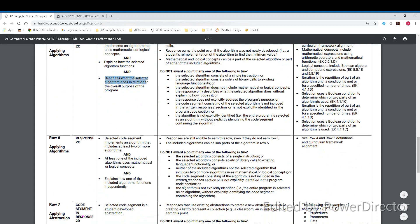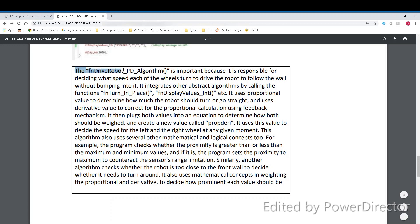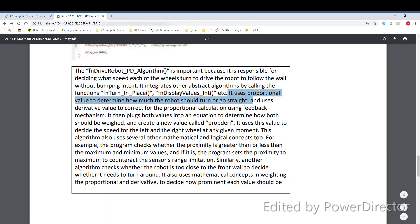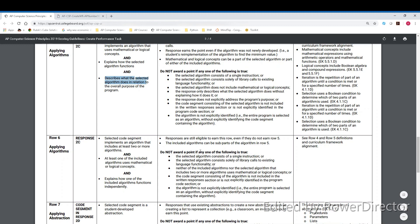The next row, row 6, is also for response 2c. This should explain how it implements an algorithm that includes at least two or more algorithms, should use mathematical or logical concepts, and explains how one of the algorithms functions independently. I note how this algorithm integrates algorithms like these two, so that would fulfill the criteria of one algorithm including two different algorithms. I also explain how each algorithm functions independently, talking about how it plugs values into an equation, and decides the speed of the left and right wheel. I also talk about how one of these algorithms uses mathematical and logical concepts, so I note it here, and then give examples here. By including all of these parts, I'd earn a point for row 6.